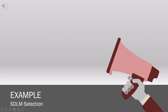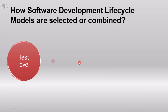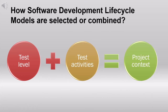You might be asking what context means here. The context is which type of system you want to develop. Depending on whether you want to develop a security lifecycle model or a safety-critical system, you would choose different development models. Now we'll get into some good examples which will help clarify how software development lifecycle models are selected or combined.